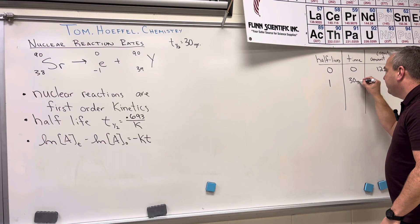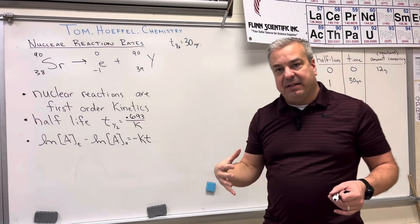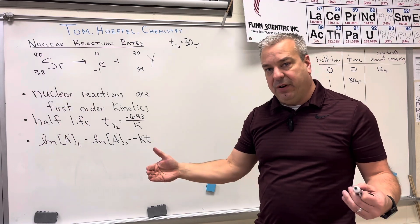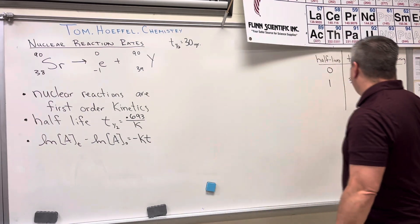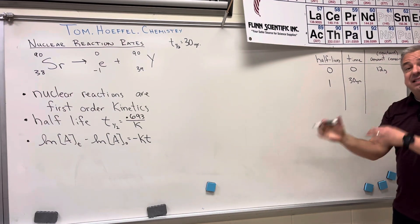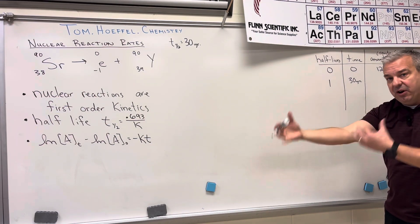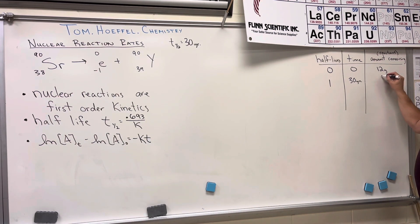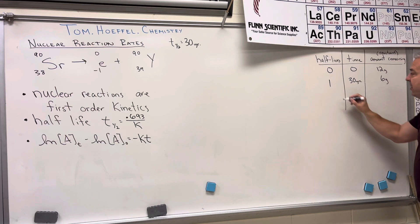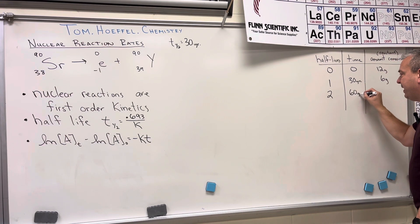After one half-life, 30 years of time has elapsed. The definition of half-life is the amount of time it takes for half of the reactant to react, so if we started with 12 grams, six grams react and six grams remain. During the second half-life, 60 years has gone by, and half of that reacts, leaving us with three grams.